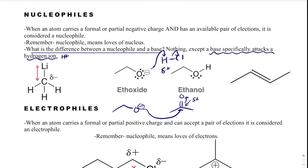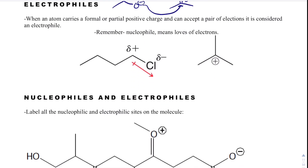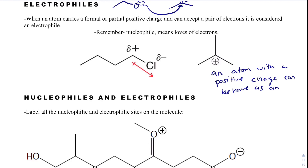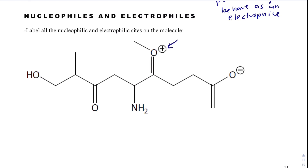Oxygen could also attack a carbon that's delta-positive — that would be nucleophilic attack rather than an acid-base reaction. An electrophile is going to be anything bonded to something delta-negative, or it could simply have a positive charge. If something has a positive charge, it can behave as an electrophile.